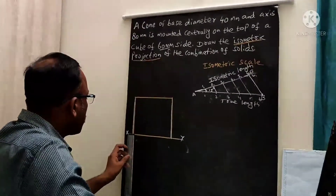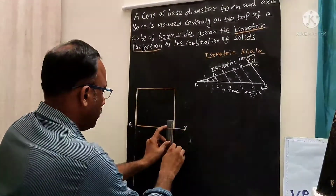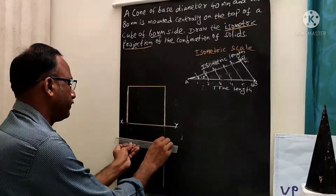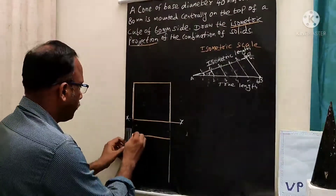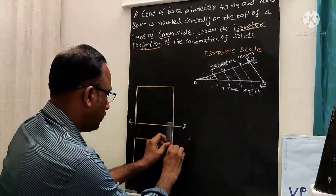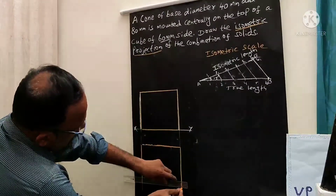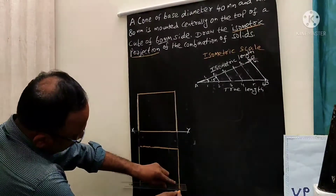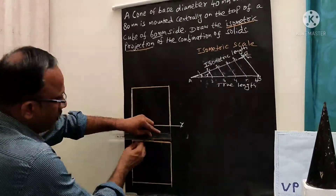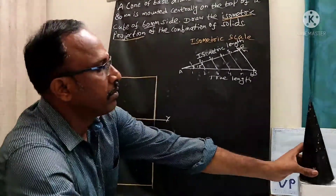Similarly, draw the corresponding top view. Draw the projection from here. Mark the top view of this particular cube. This is the top view of this cube — for the same cube, with the same 60 mm side taken for all four sides. We need to draw this square — the top view is also a square.